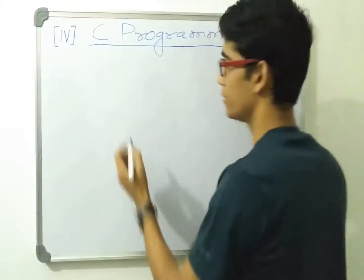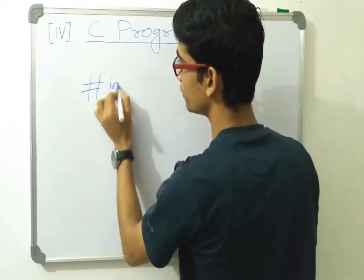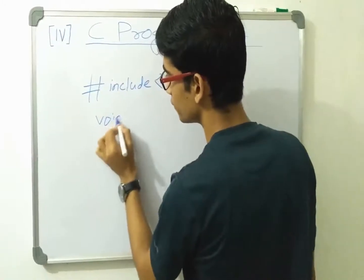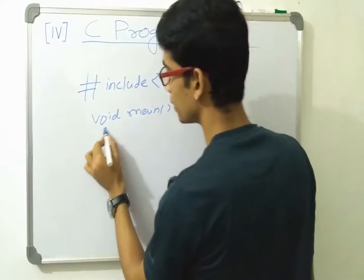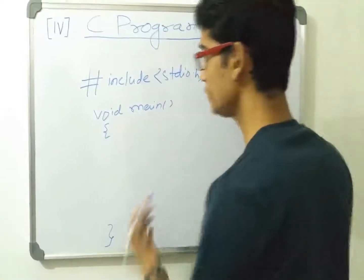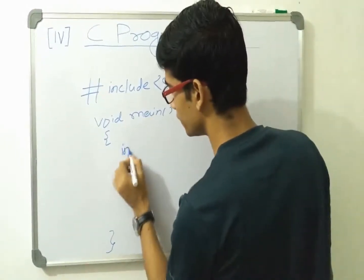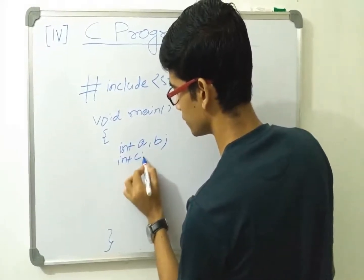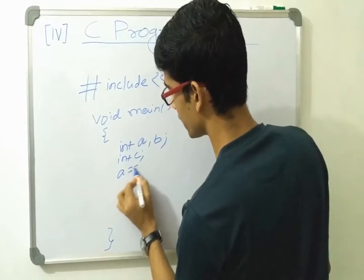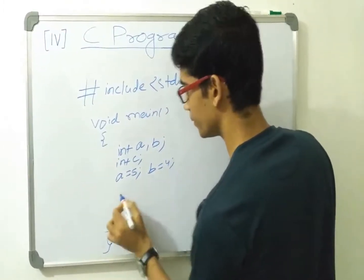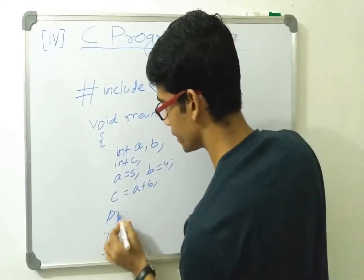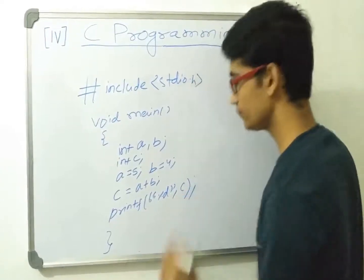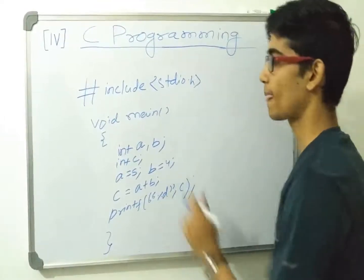So let me first write a sample program and then we will discuss all the points. The basic construct of a C program is: #include stdio.h, then void main with opening and closing curly braces. Suppose I want to add two numbers — I write int a, b and int c, then a = 5, b = 4, c = a + b, and then printf("%d", c).